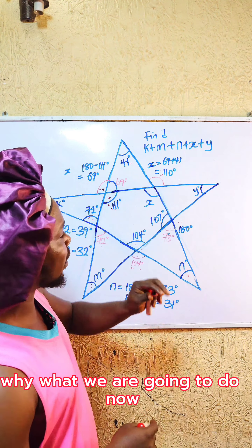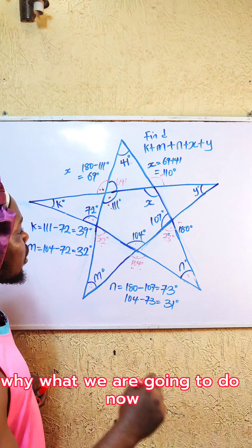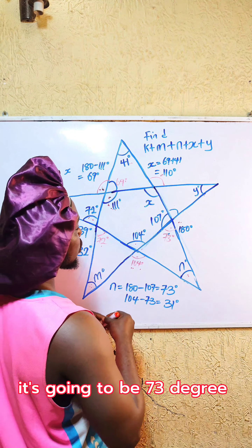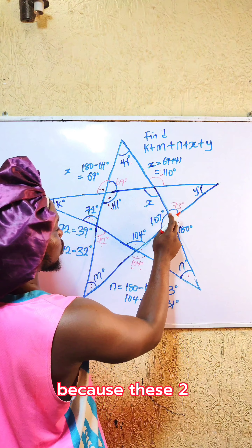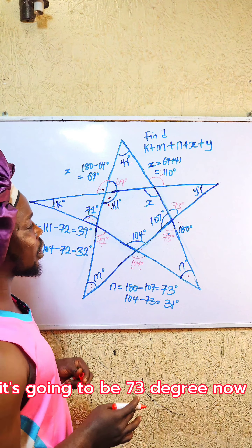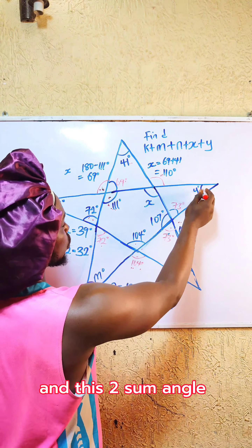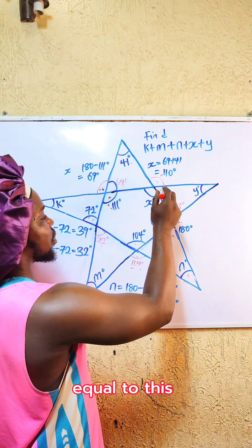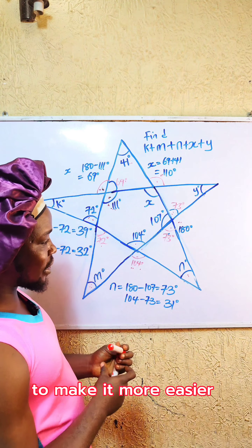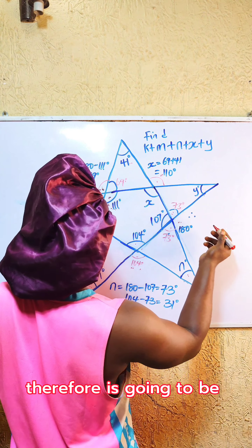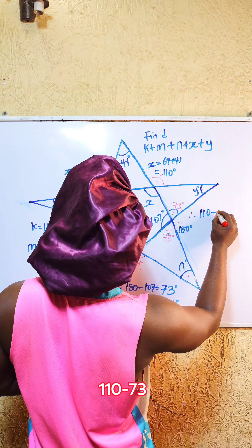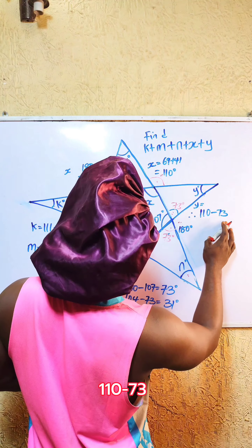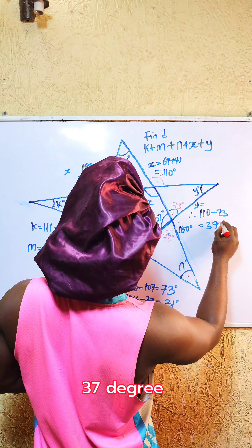Now over to finding y. This angle is already 73 degrees — these two angles are equal, so this one is also 73 degrees. Using the same rule — two interior angles equal the exterior angle — therefore y = 110 minus 73, which gives us 37 degrees.